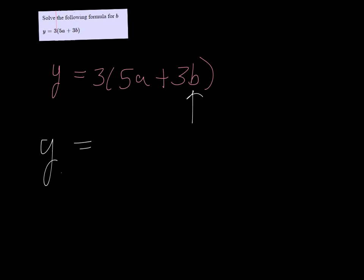Let's start by distributing the 3, so we get 15a plus 9b. If we want b by itself, we should get rid of this 15a.